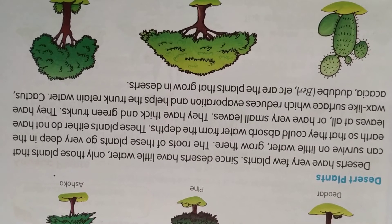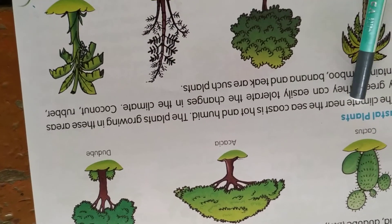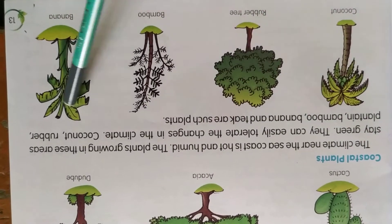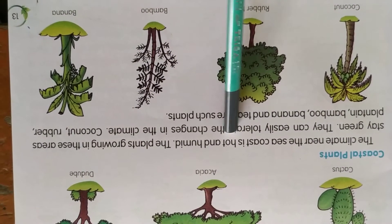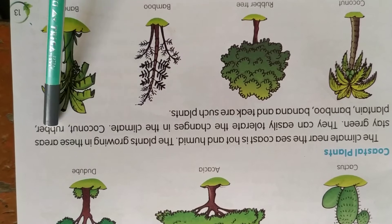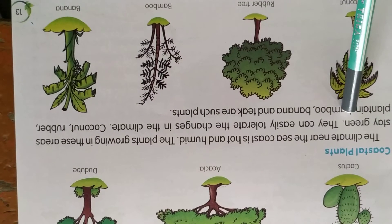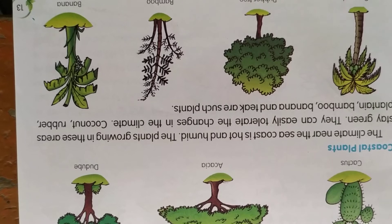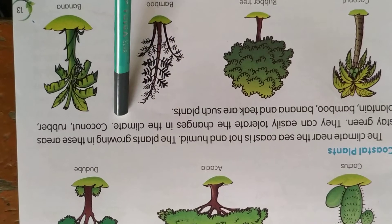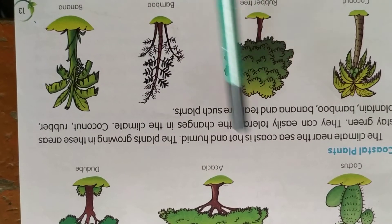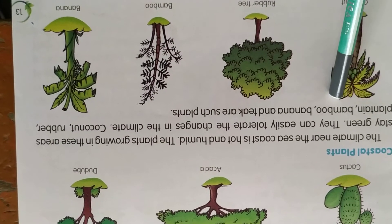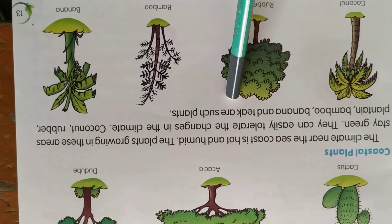Coastal plants grow near the seacoast where the climate is hot and humid. The plants growing in this area stay green and can easily tolerate changes in climate. Coconut, rubber, plantain, bamboo, banana, and tea are examples of such plants.